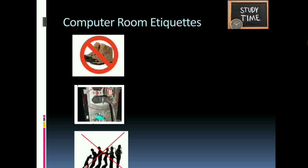Computer room etiquettes: remove your shoes before entering the computer room, because shoes contain dust which can be harmful to electronic equipment including the computer. Open the door of the computer room slowly and enter calmly and quietly. Never touch computer parts or attached cables, as they can be harmful to both you and the computer.